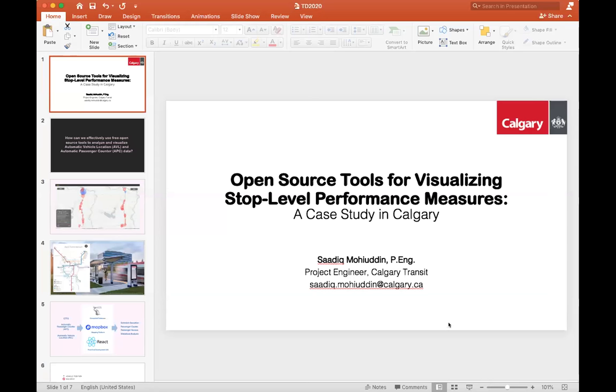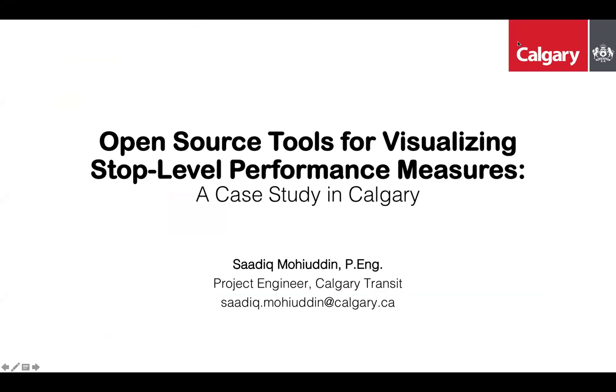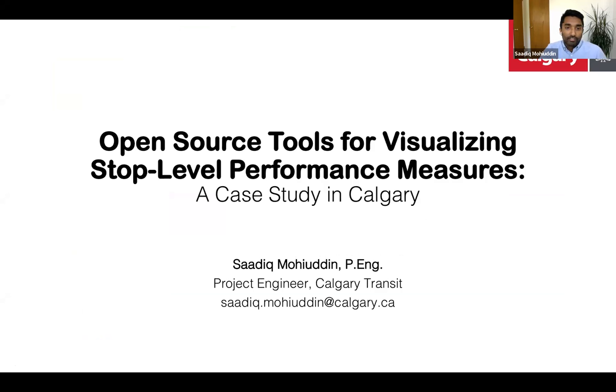My name is Sadiq Moedin. I'm a project engineer with Calgary Transit. My lightning topic today is about open source tools for visualizing stop-level performance measures, primarily for buses, using Calgary Transit as a case study. The question is: how can we effectively use free open source tools to analyze and visualize AVL and APC data? The ubiquity of cloud computing, software as a service, and open source software make them attractive options for developing inexpensive tools to analyze large amounts of transit data.